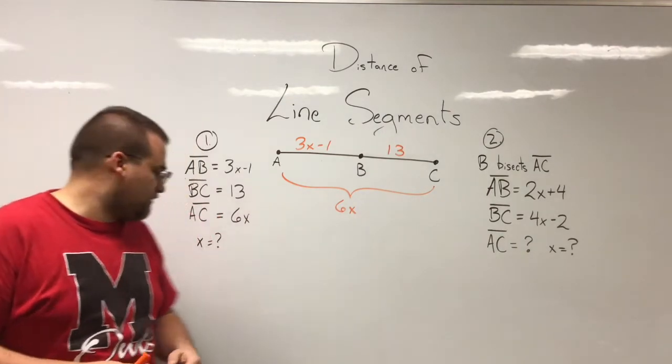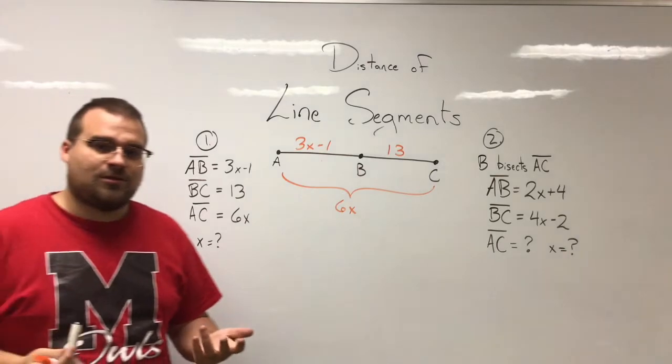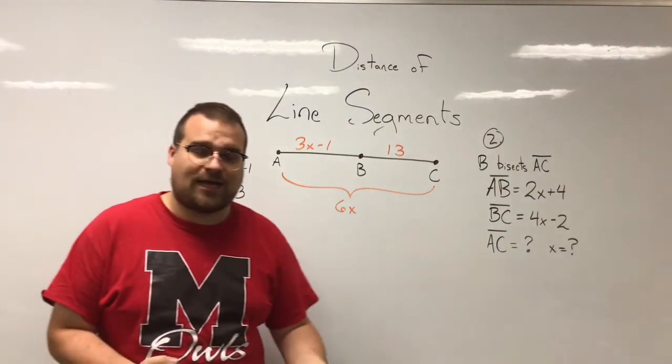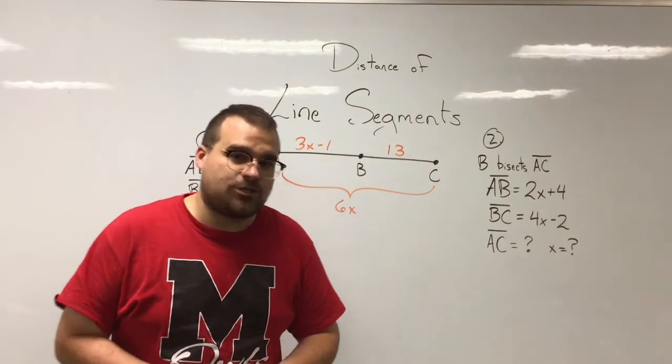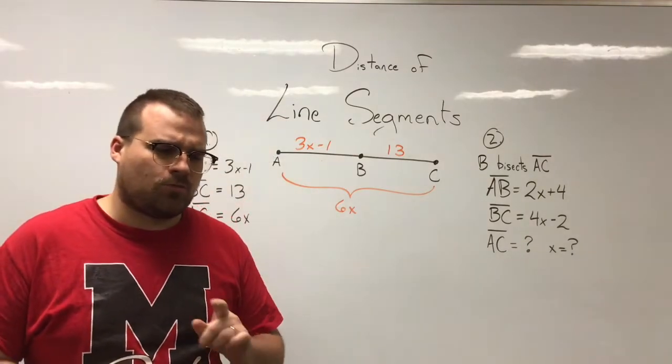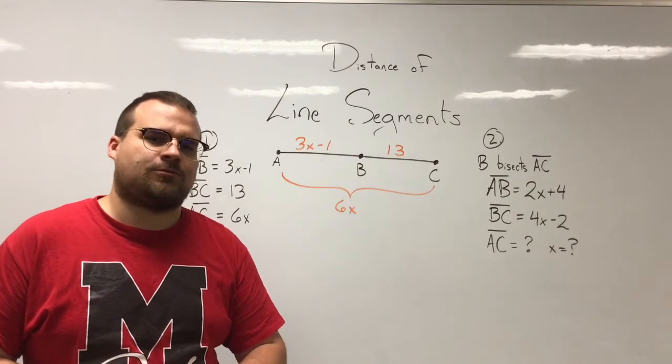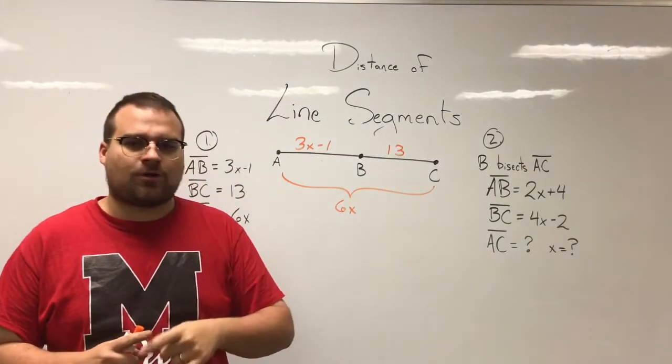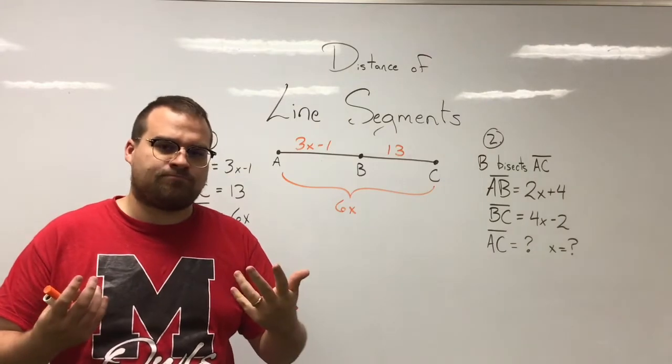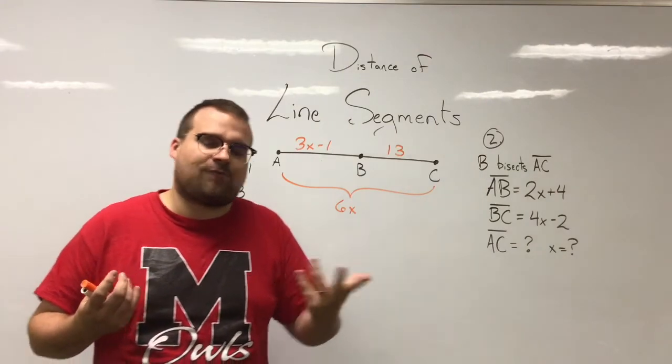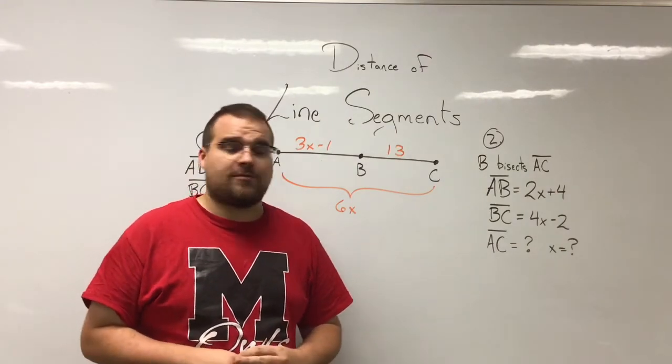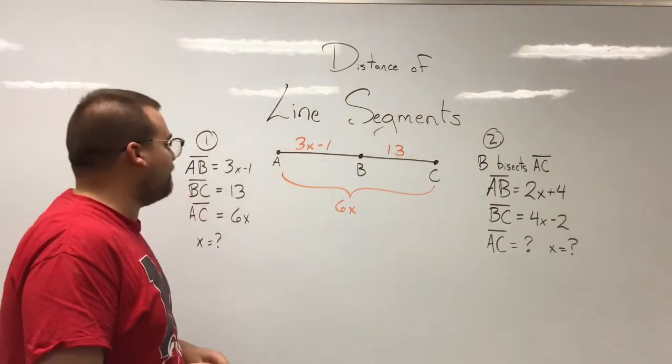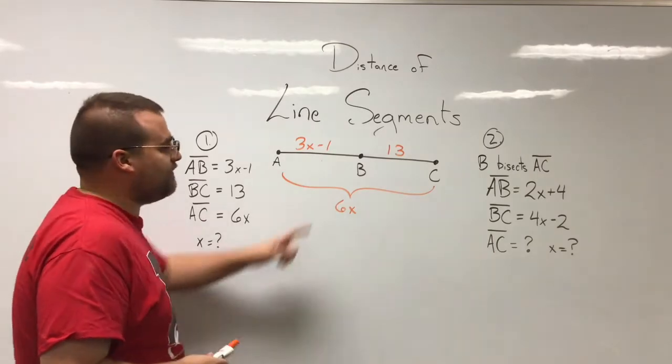So I've got to figure out what do I do with this information, how can I figure out what x is. Well, we have to write an equation based off this diagram that we have and based off the information we're given. So we need to ask an important question: are AB and BC congruent? Are they equal to each other, are they the same? Unfortunately we don't know.